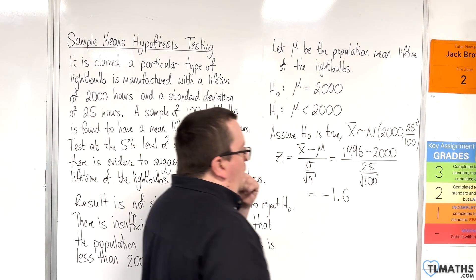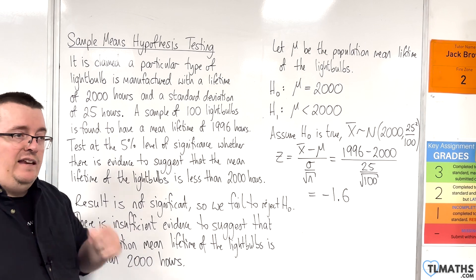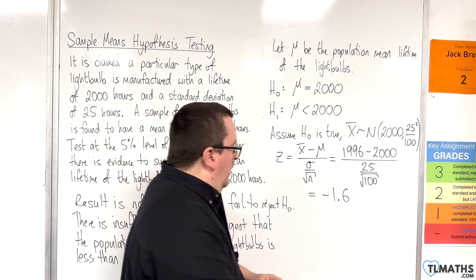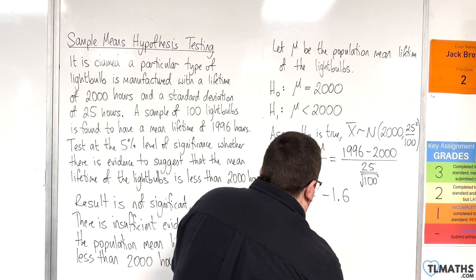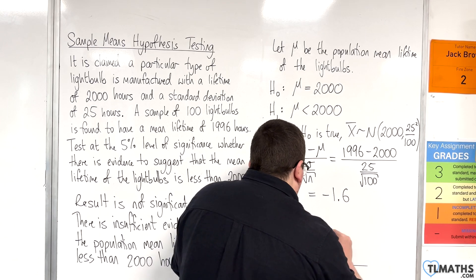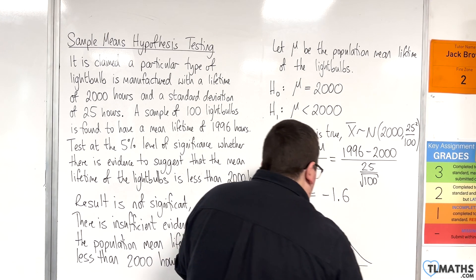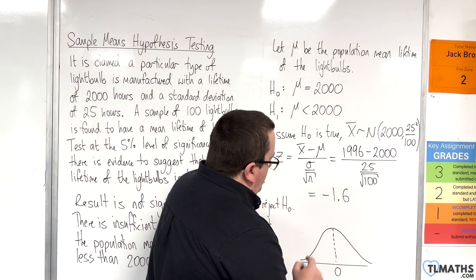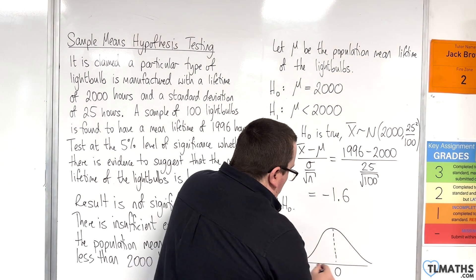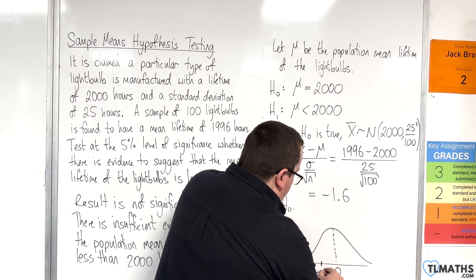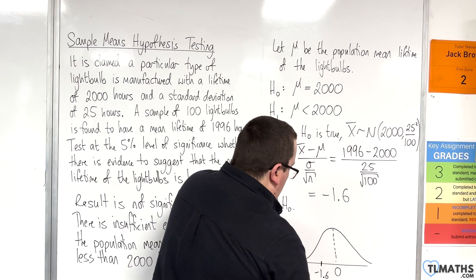Okay. Now, what do we test it against? Well, what we're doing here is we are looking at a standard normal distribution. Here's 0. The value that we've just found is minus 1.6, which is somewhere here.